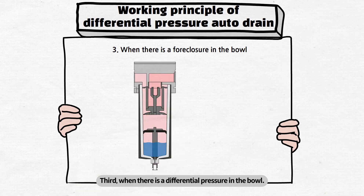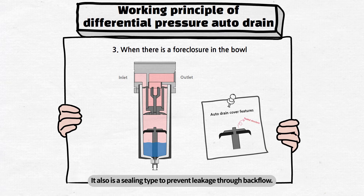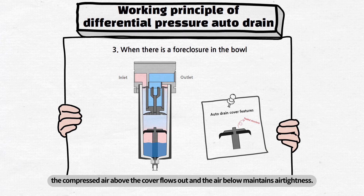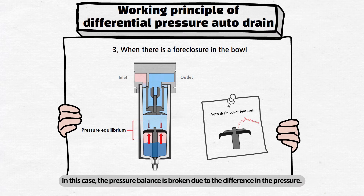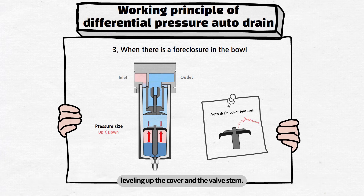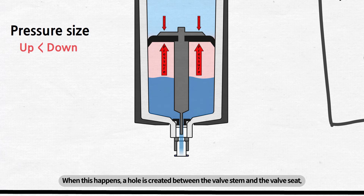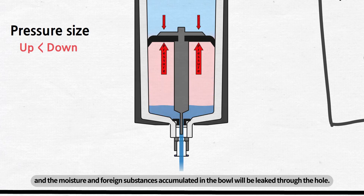Third, when there is a differential pressure in the bowl: the auto drain cover has the shape of an umbrella to enable easy flow of compressed air, moisture, and foreign substances. It is also a sealing type to prevent leakage through backflow. When some of the compressed air leaks through the outlet, the compressed air above the cover flows out while the air below maintains airtightness. The pressure balance is broken due to the difference in pressure, and the compressed air pressure under the cover becomes higher than the pressure above, leveling up the cover and the valve stem. A hole is then created between the valve stem and the valve seat, and the moisture and foreign substances accumulated in the bowl are discharged through that hole.